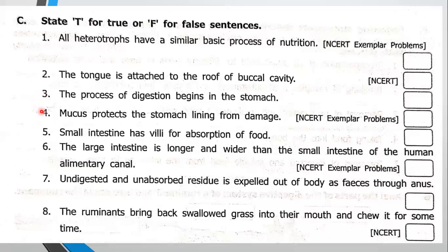Next one: mucus protects the stomach lining from damage. That is correct. The stomach secretes three types of juices: mucus, digestive juices, and hydrochloric acid. The mucus protects the wall of the stomach. So this statement is true.